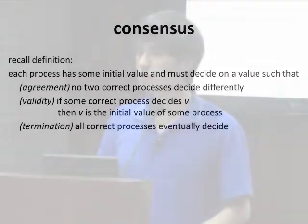Now let's cover the definition of consensus for asynchronous systems. Consensus is defined by three properties: agreement says that correct processes must decide on the same value; validity says that the decided value must be related to initial values; and termination says correct processes eventually decide.